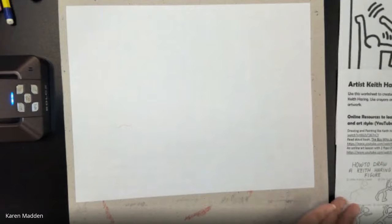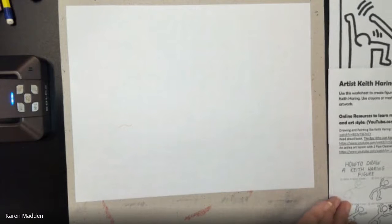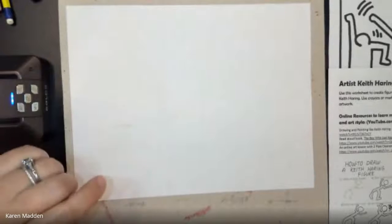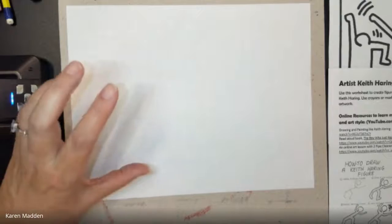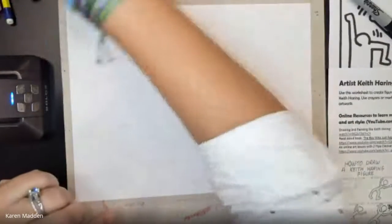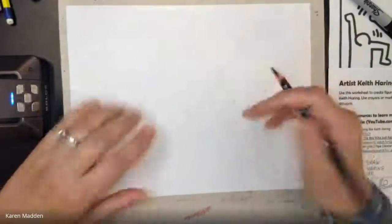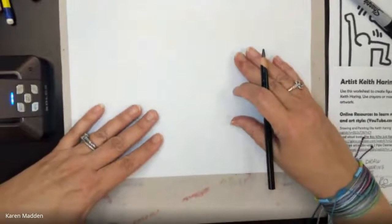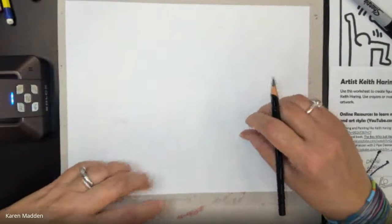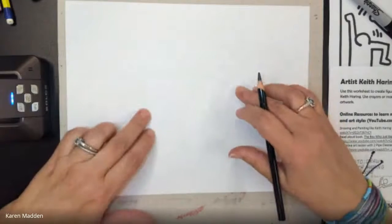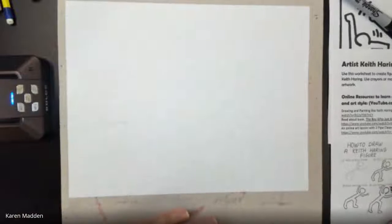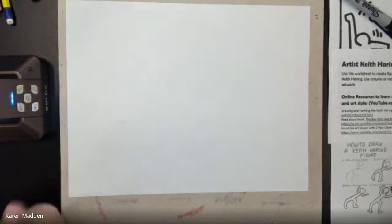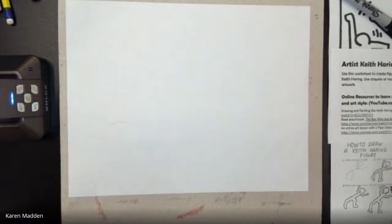So how do I start a Keith Haring inspired figure? This is where you may want the pencil if you do not feel very comfortable jumping into creating it. So let me go ahead and show you with the pencil first. So mine is going to be a lot darker than yours. You want to be able to draw so lightly that you can eventually erase these pencil lines and work around them. So the first thing that we want to do is we want to draw a stick figure. How many of you have ever heard your teacher say draw a stick figure? But that's what we're going to do today. We're going to start with a stick figure. So here we go.